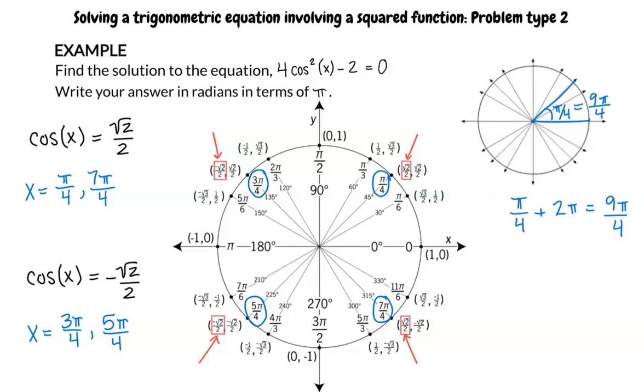For example, pi over 4 and 9 pi over 4 are coterminal angles. So how do you represent all of the coterminal angles in your answer? Great question! You're already one step ahead. We use notation to represent the coterminal angles.